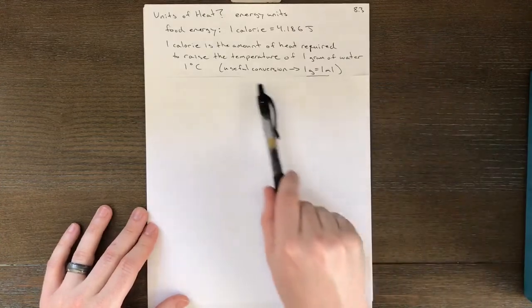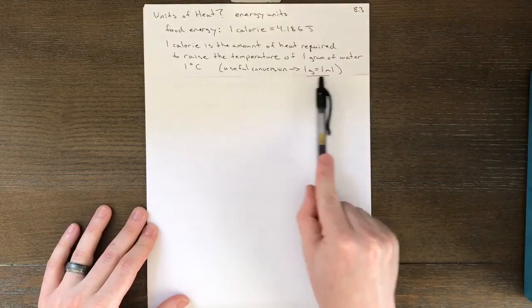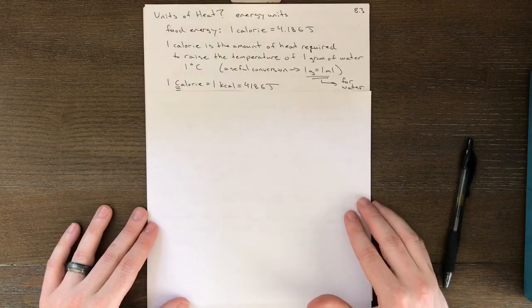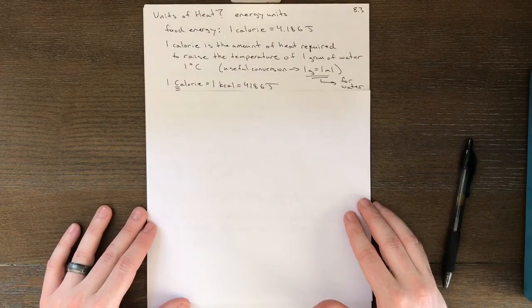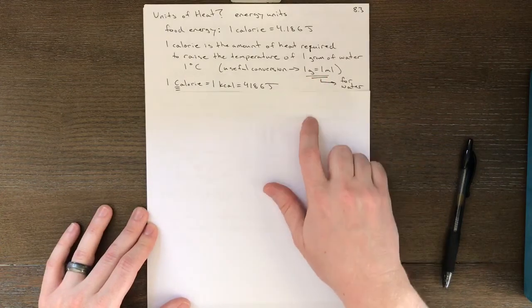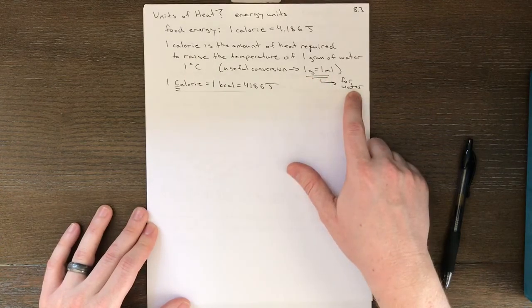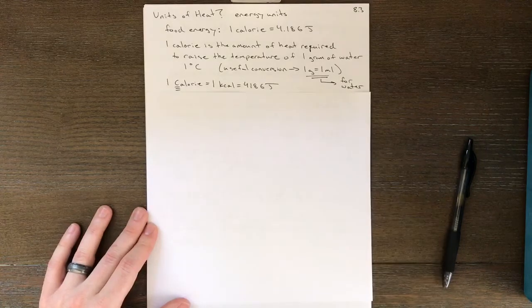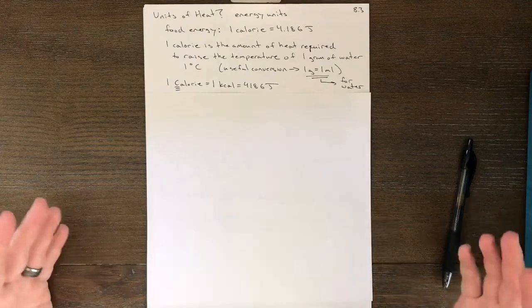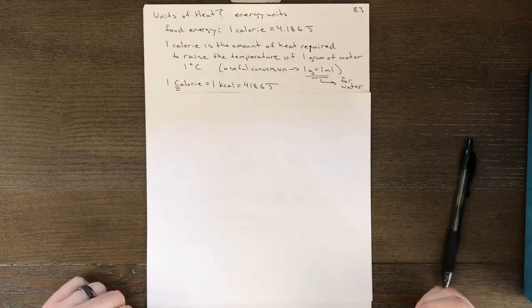And I'll take this moment to mention a useful conversion. For water, one gram is one milliliter. One milliliter of water has a mass of one gram, so you can convert back and forth swapping out grams for milliliters, but only for water. Other things have different densities, and this is only true for water. But we'll be using water a whole lot in our examples of heat.